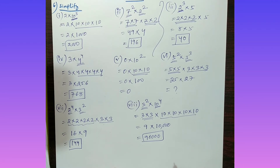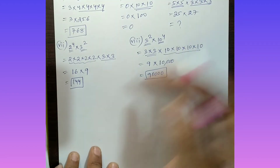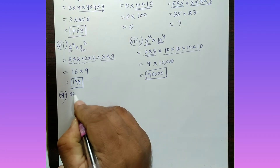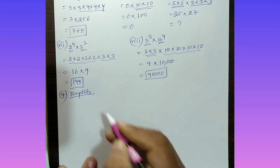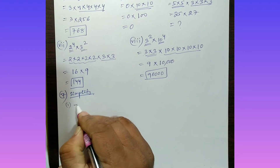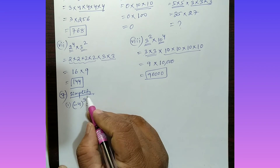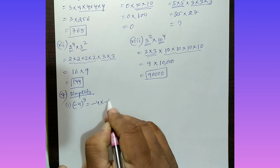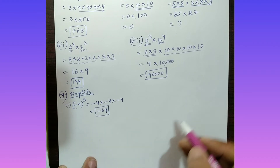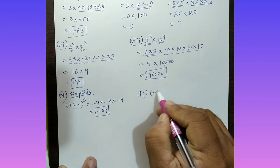Now moving to question number 7. Part (i): Simplify minus 4 to the power 3. This means minus 4 is multiplied 3 times: minus 4 into minus 4 into minus 4. The answer is minus 64.